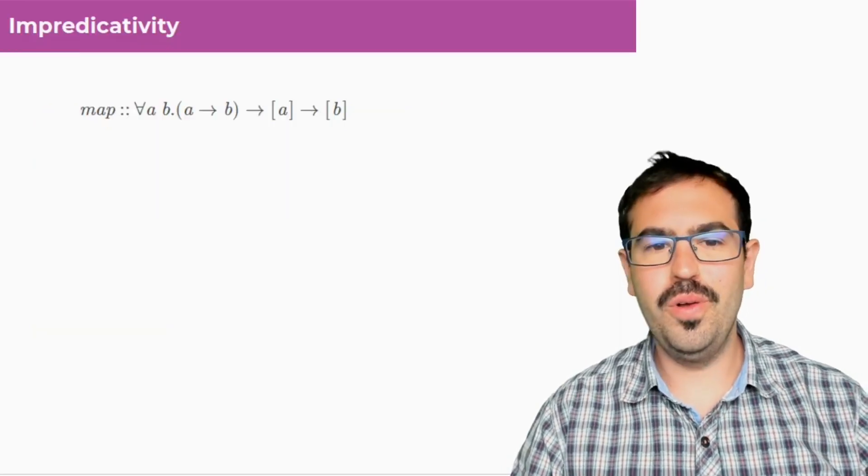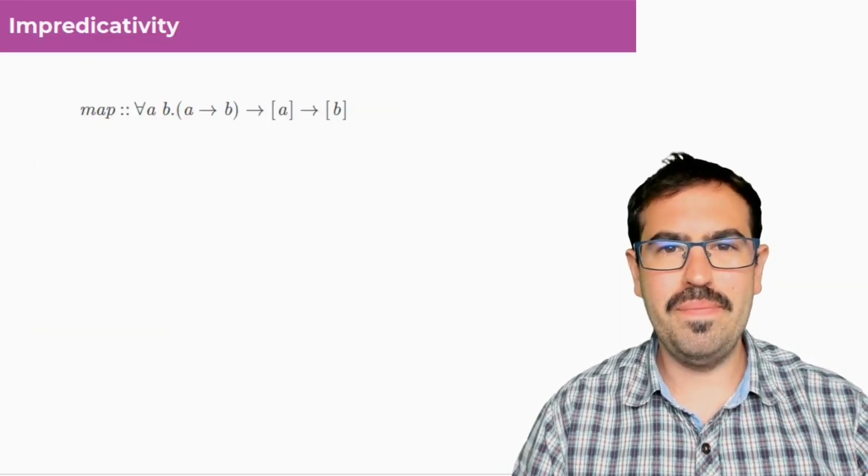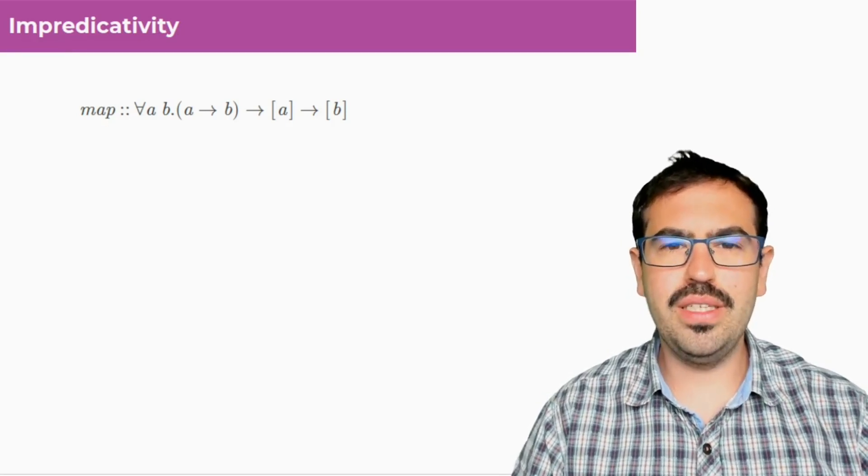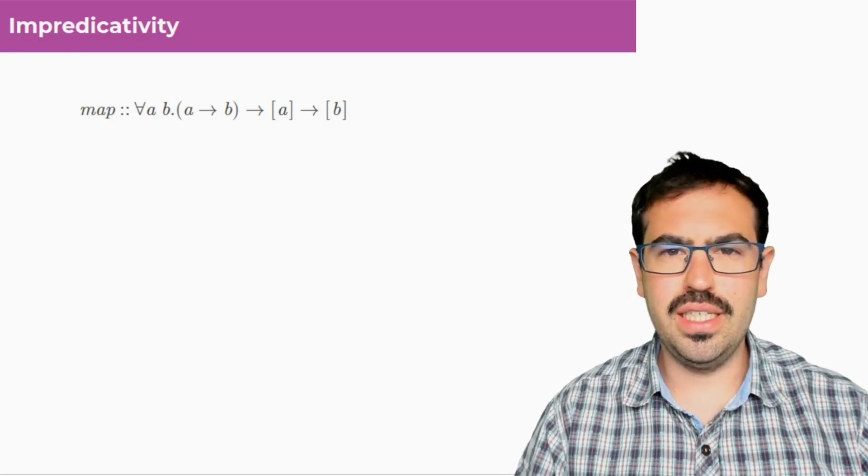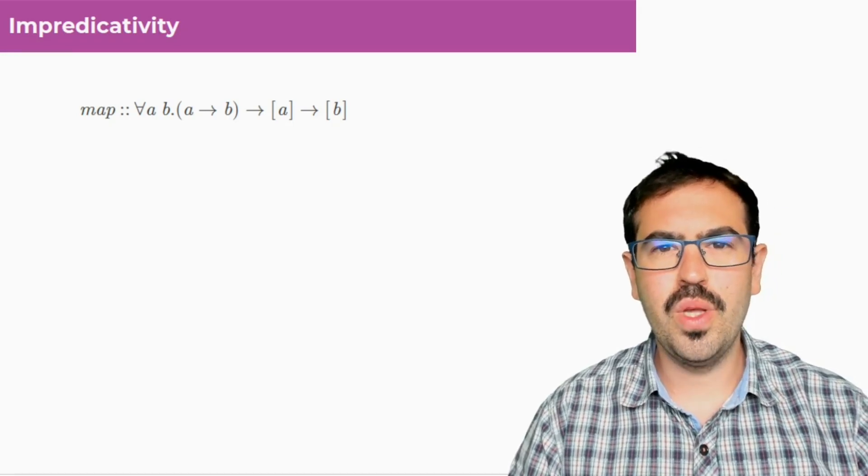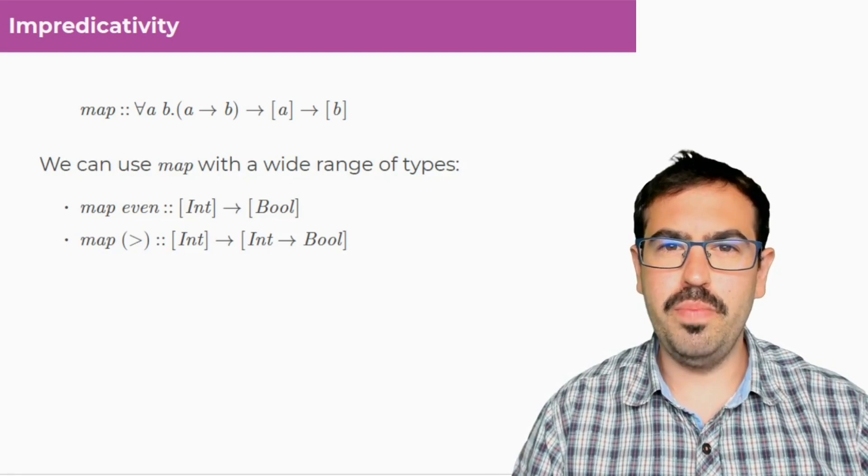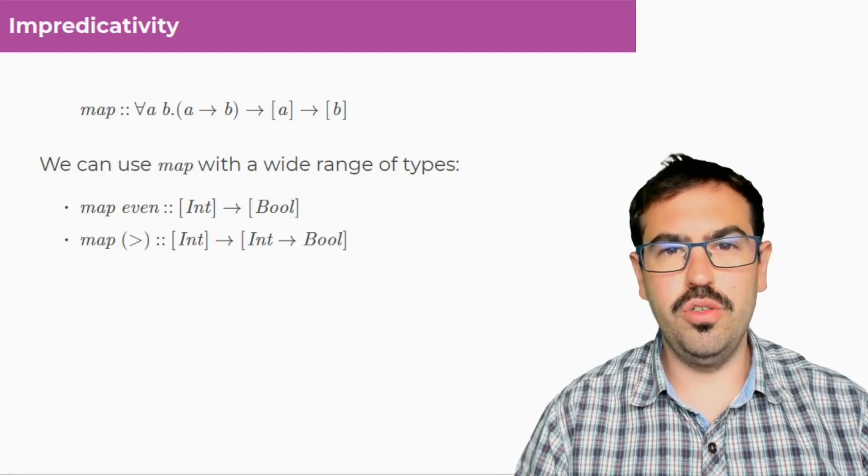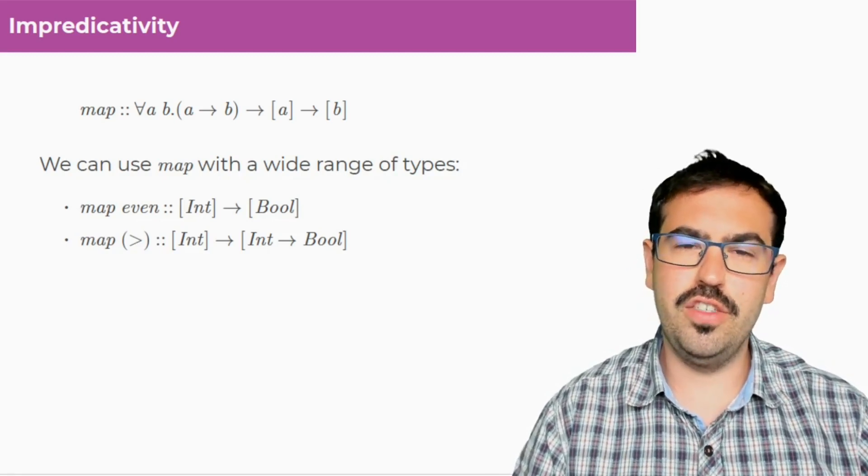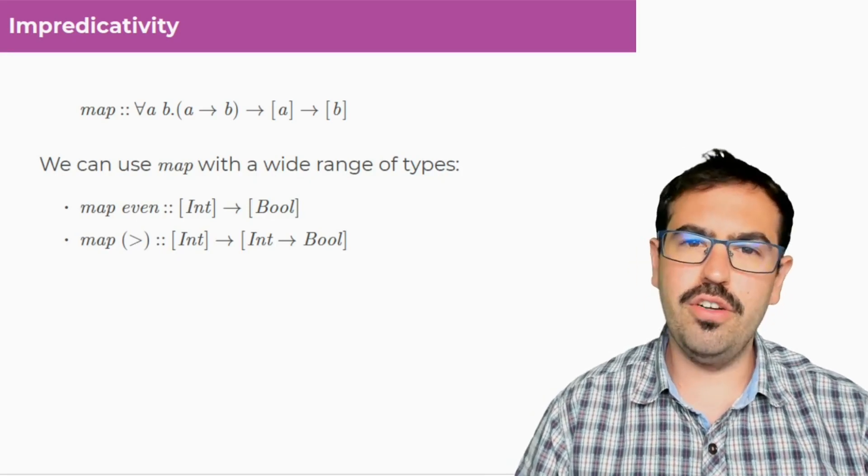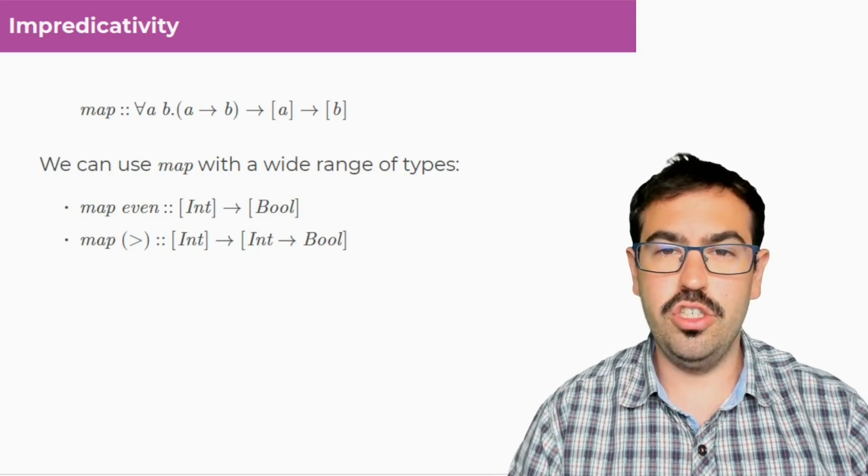But first of all, what is impredicativity? Take a function like map. It has two type arguments and it takes a function, a list, and returns a list. Because this function is polymorphic, we can use map with a wide range of types. We can use map even and get a function from list of ints to list of bools, or we can have map greater than and have a list of ints to a list of functions.